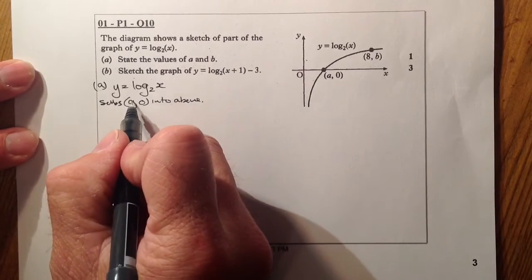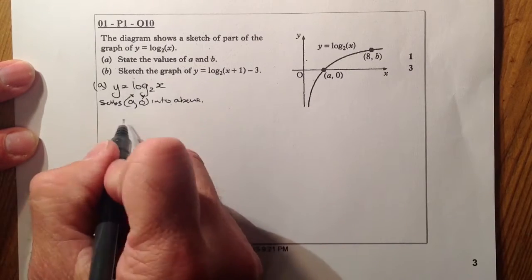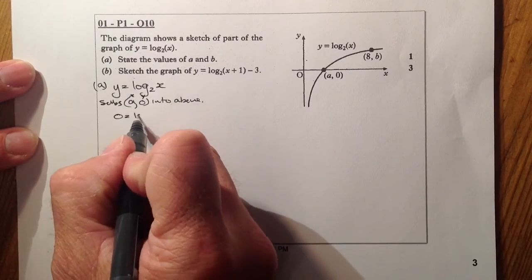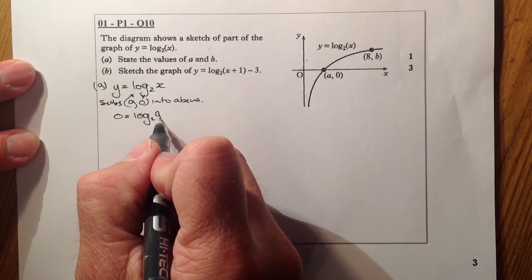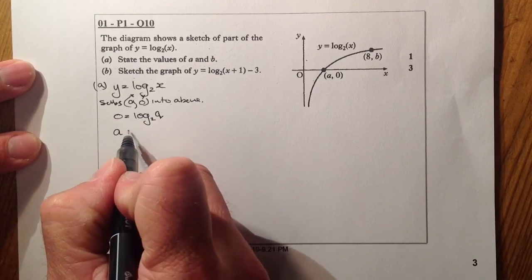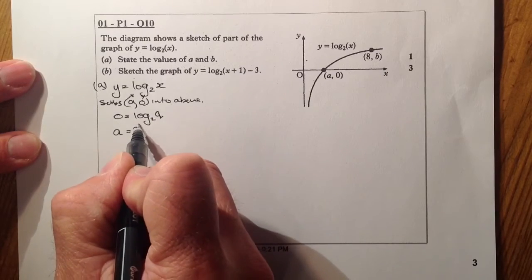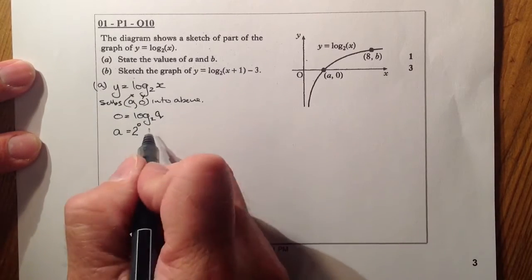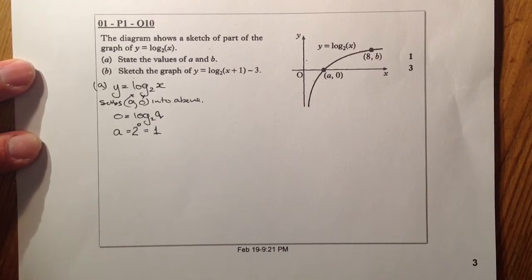So wherever I see a, that's my x; wherever I see 0, that's my y. So 0 equals log a to base 2. I'll change it to exponential form, so a is going to be equal to 2 to the power of 0. Anything to the power of 0 will give me an answer of 1. So a equals 1.